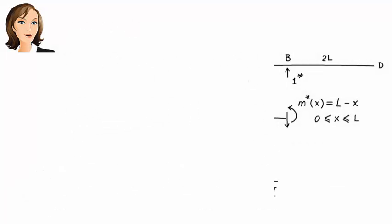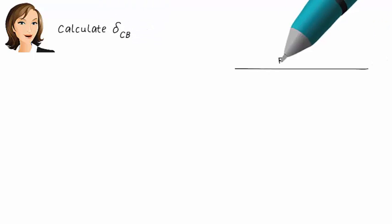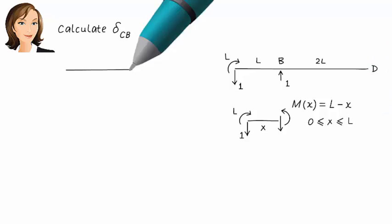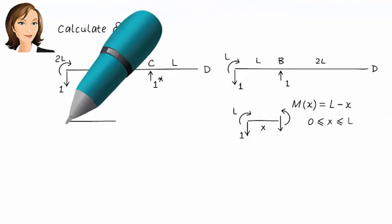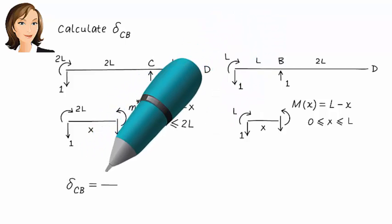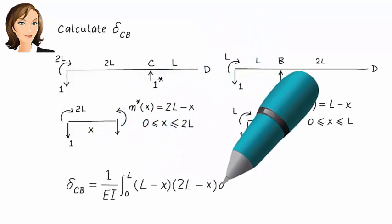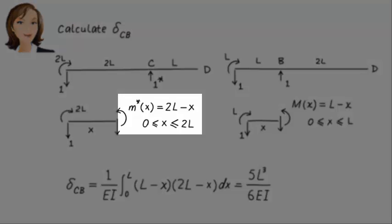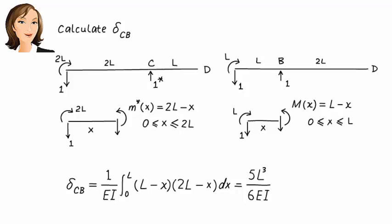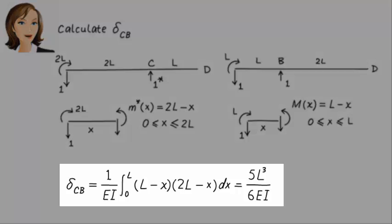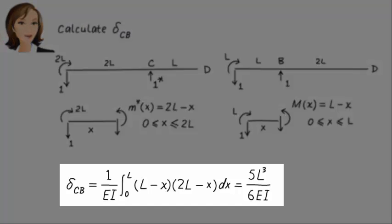Finally, we calculate delta CB, vertical displacement at C due to a vertical unit load at B. What we refer to as M when calculating delta BC becomes M star here, and the M star we used for delta BC becomes M here. Not surprisingly, delta CB equals delta BC.